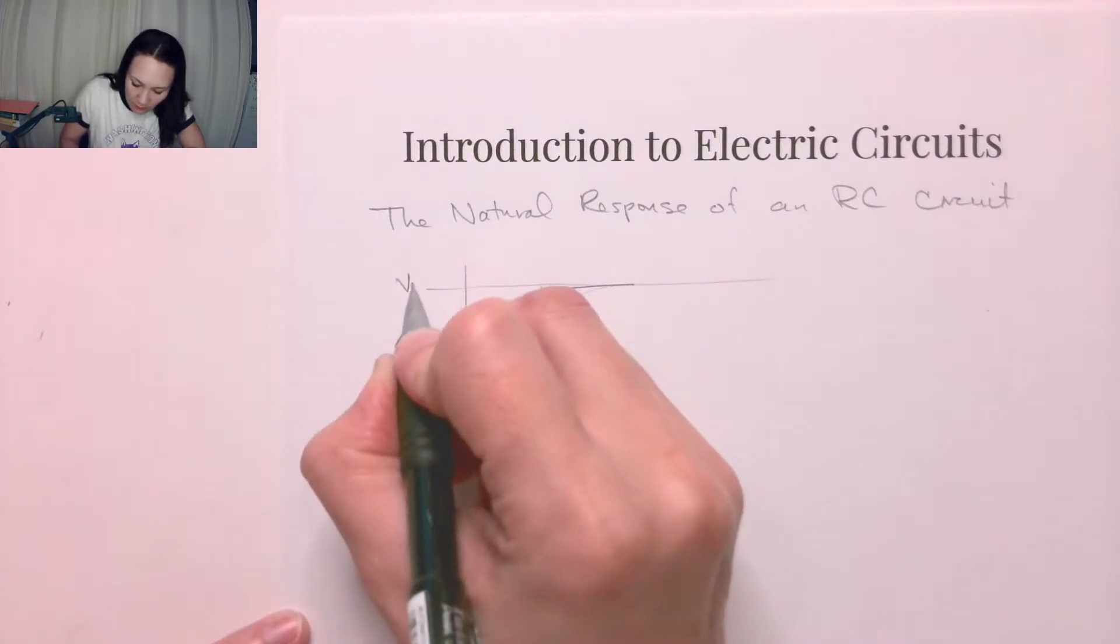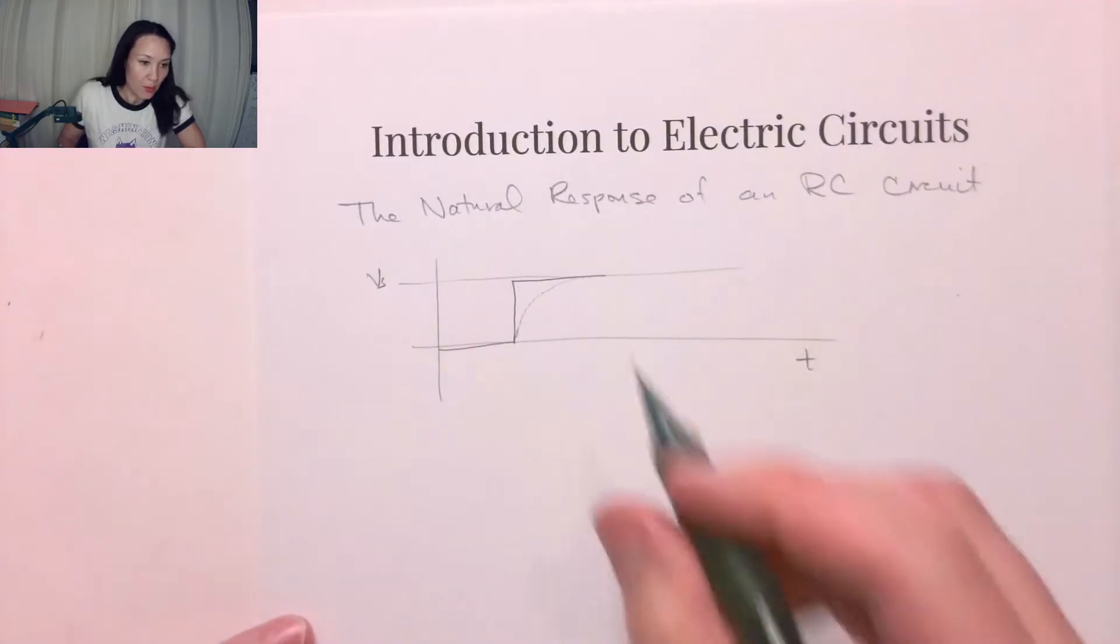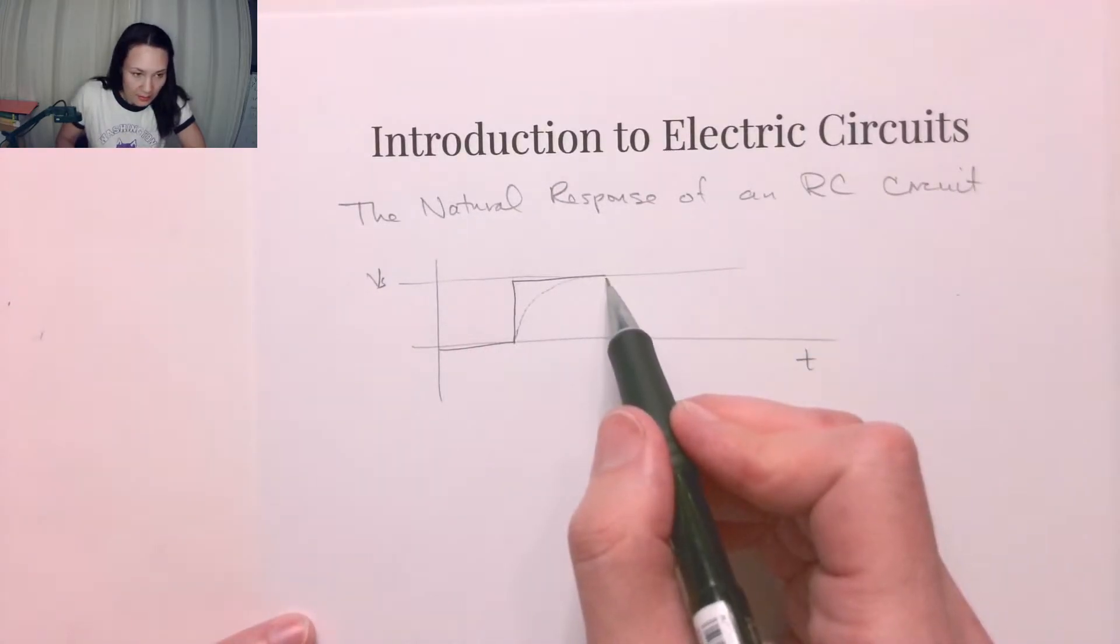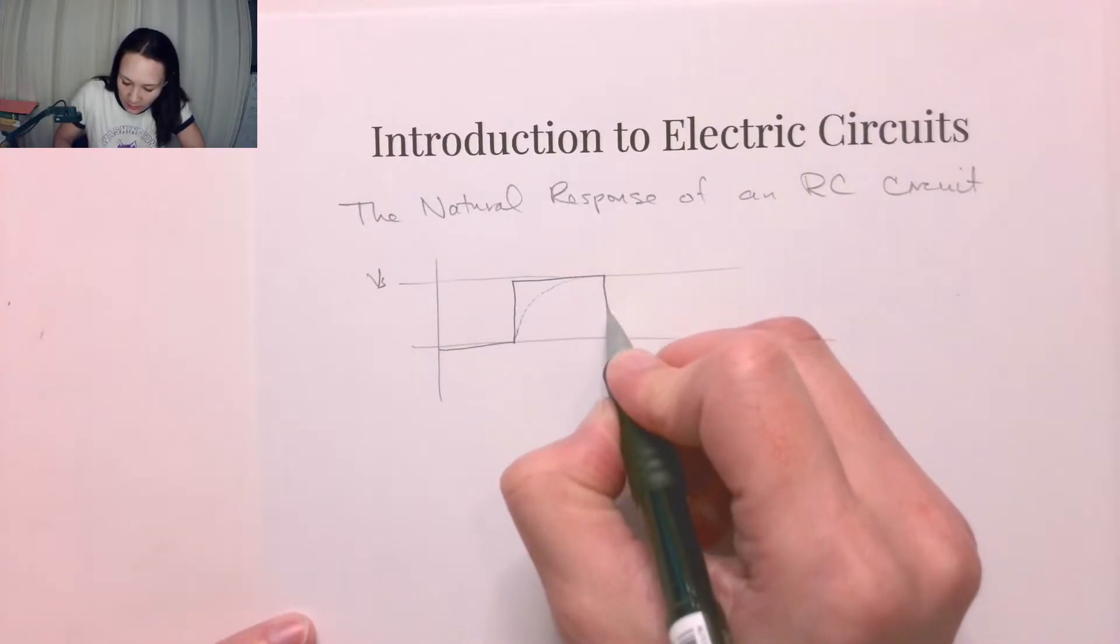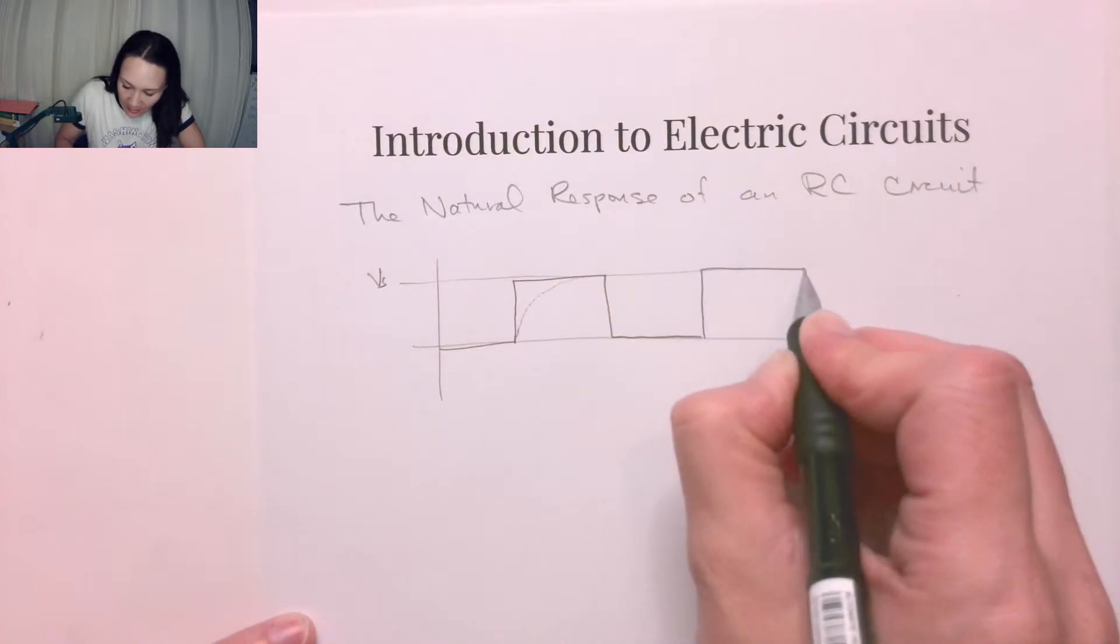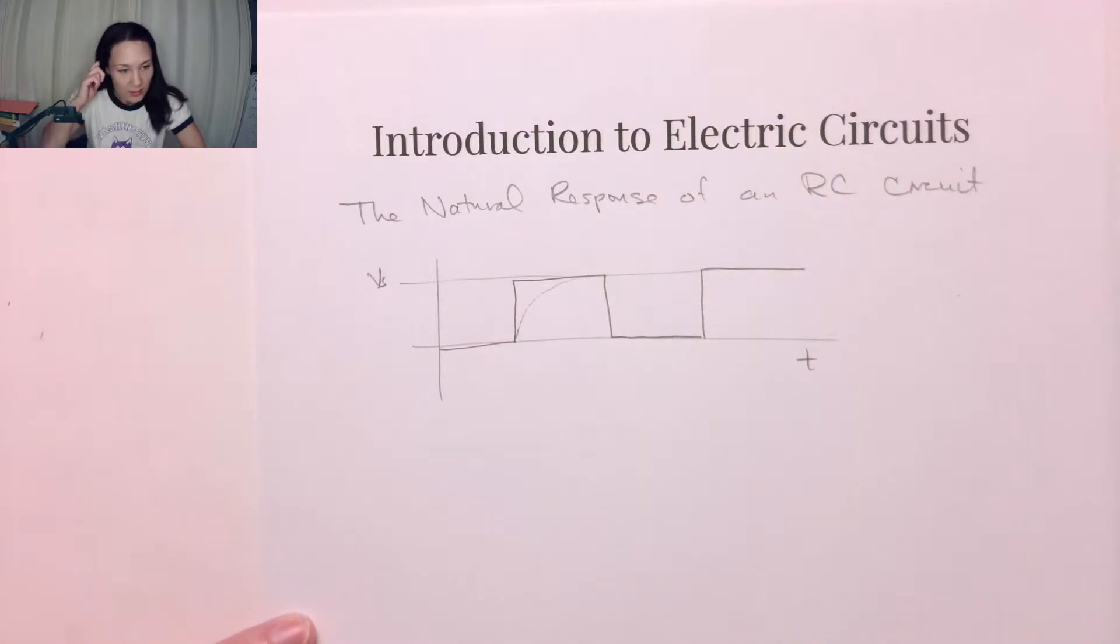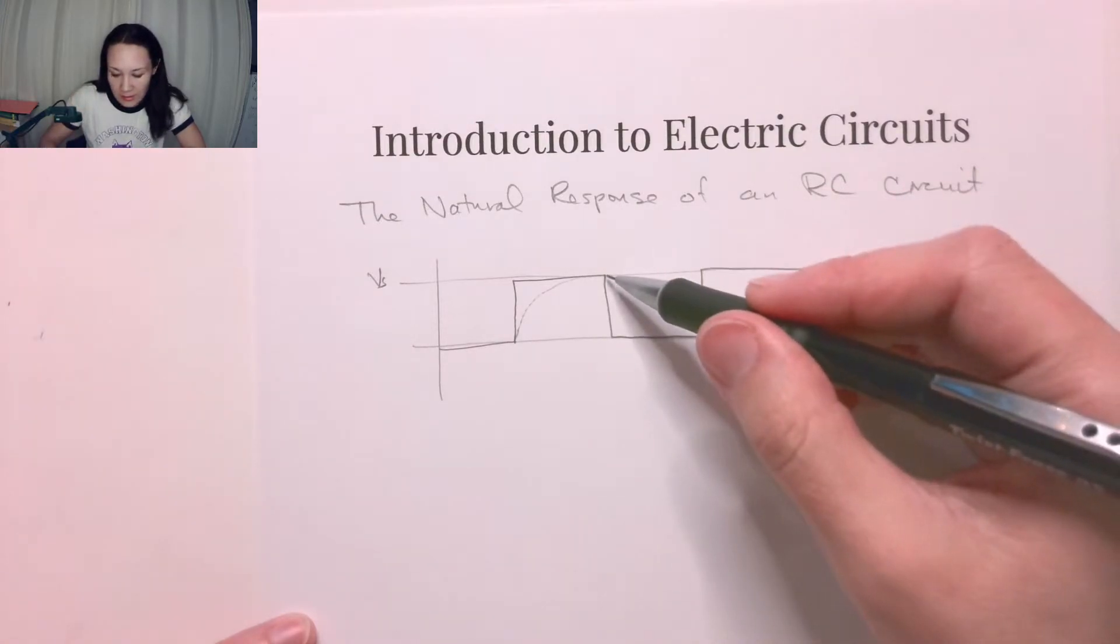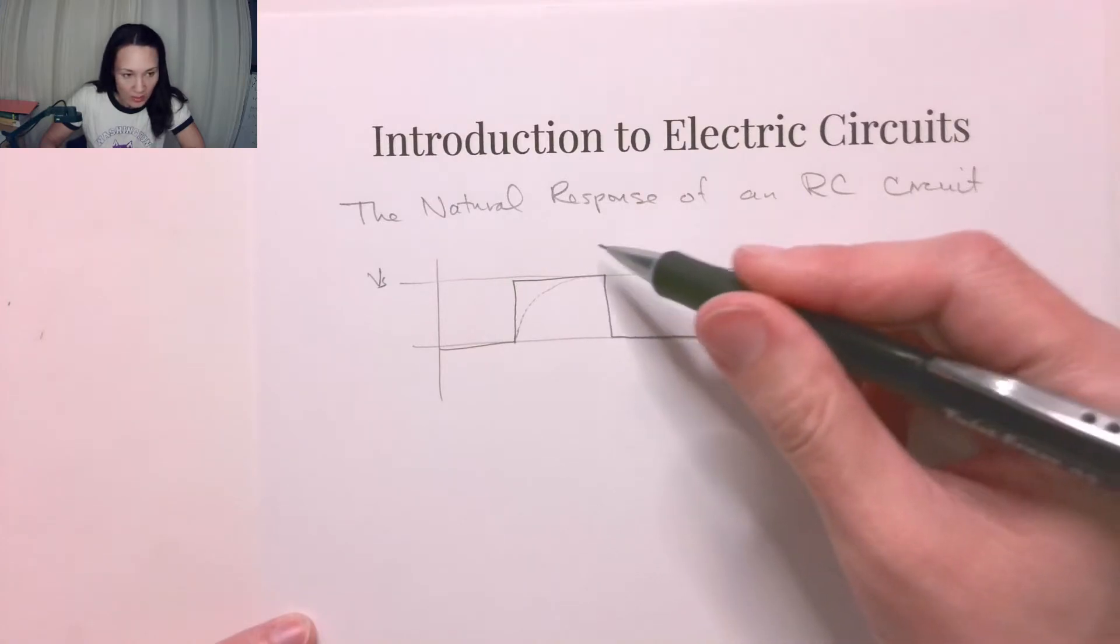Where this is Vs and this is time. This is a step function. If we have a square wave that's going to fall, continue at zero, and then come back up again, the natural response is the response of the RC circuit when this step voltage turns off, basically this region right here.